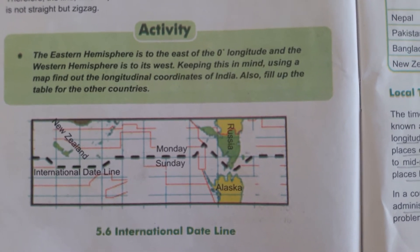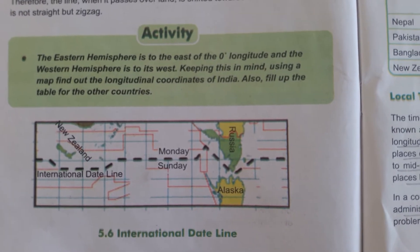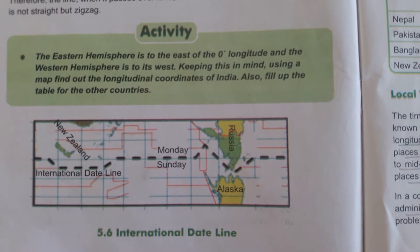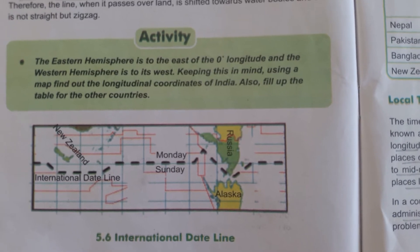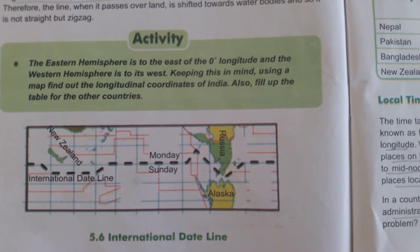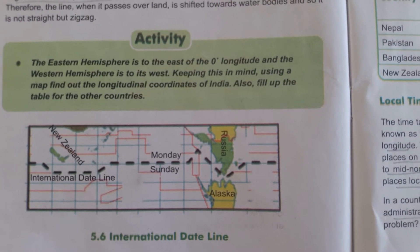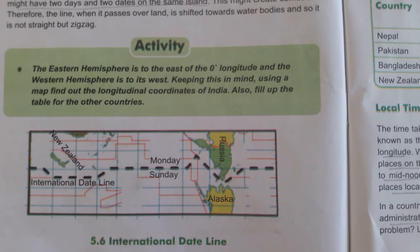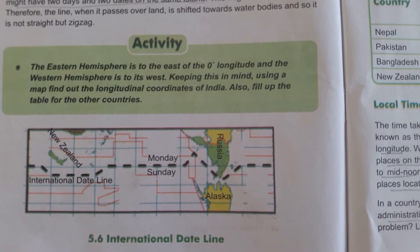Otherwise it would happen that the island would have two dates on the same island. So, this is the international date line.